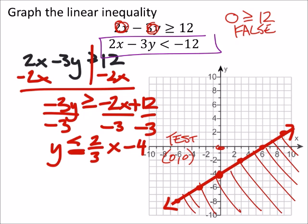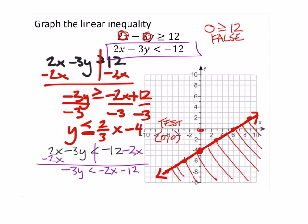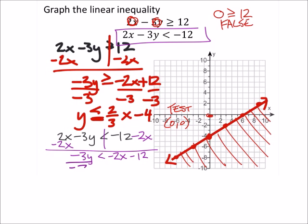I'm going to do this one in purple here. I got 2x minus 3y less than negative 12. I will subtract 2x from both sides. I got negative 3y is less than negative 2x minus 12. And I would divide everywhere by negative 3, which flips my inequality. So y is greater than 2 thirds x plus 4.